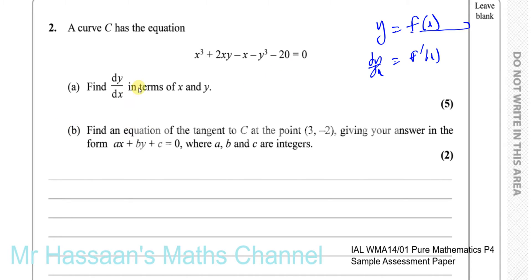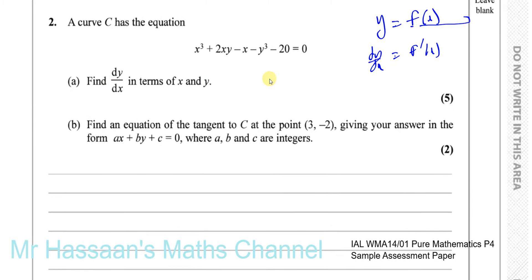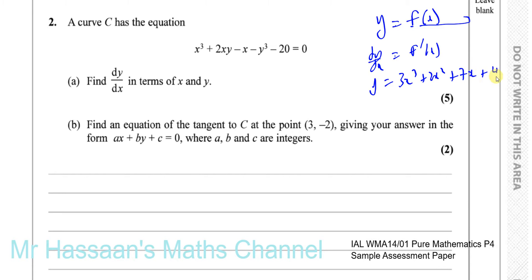In this case, making y the subject of the formula will be a bit awkward and won't leave us something which is easy to differentiate. So what we're going to do is use implicit differentiation, where you differentiate each term separately with respect to x — which is actually what we do normally when we're differentiating something like y equals 3x³ plus 2x² plus 7x plus 4.